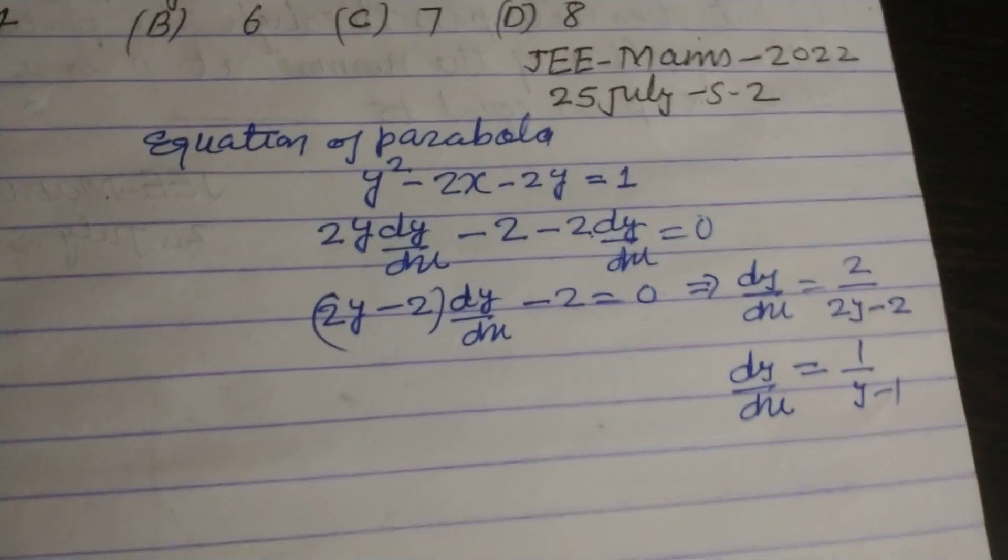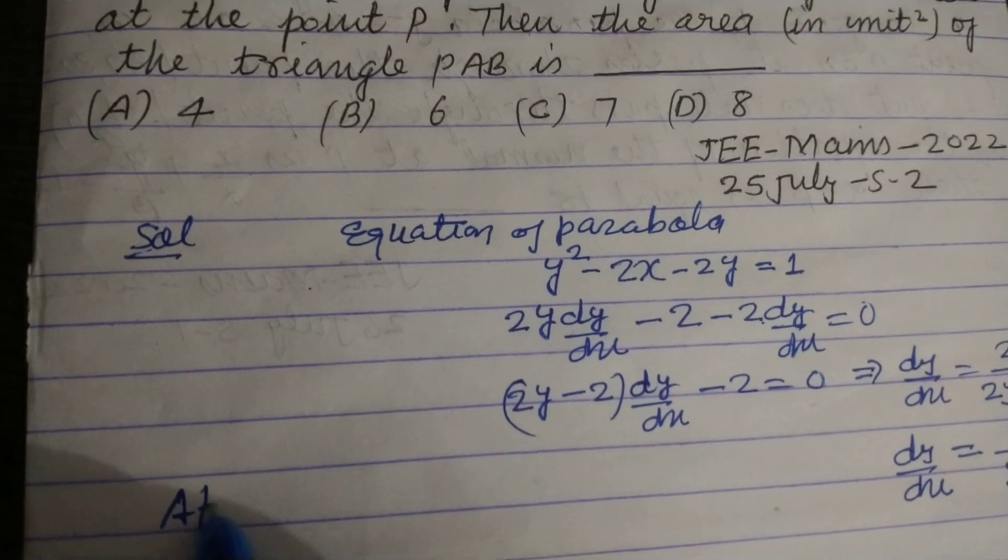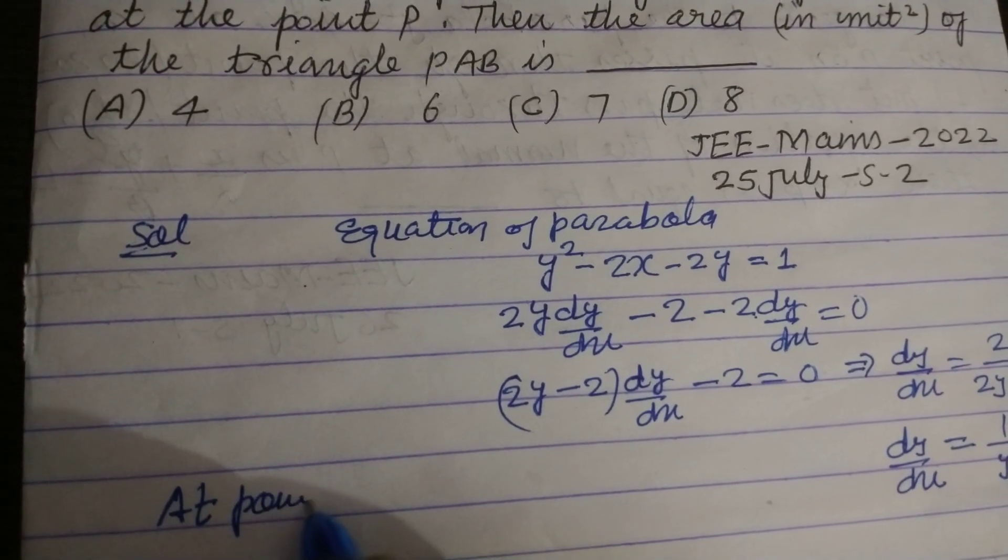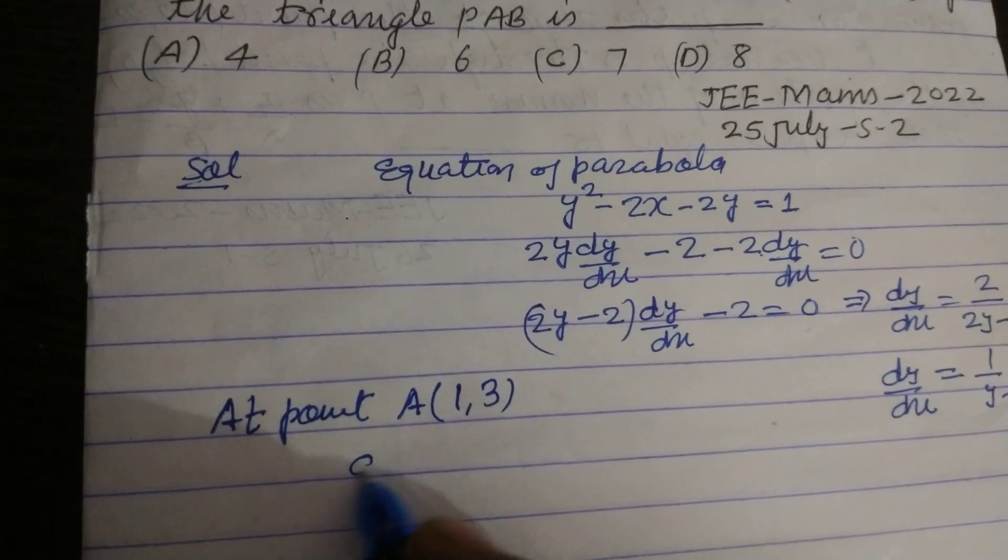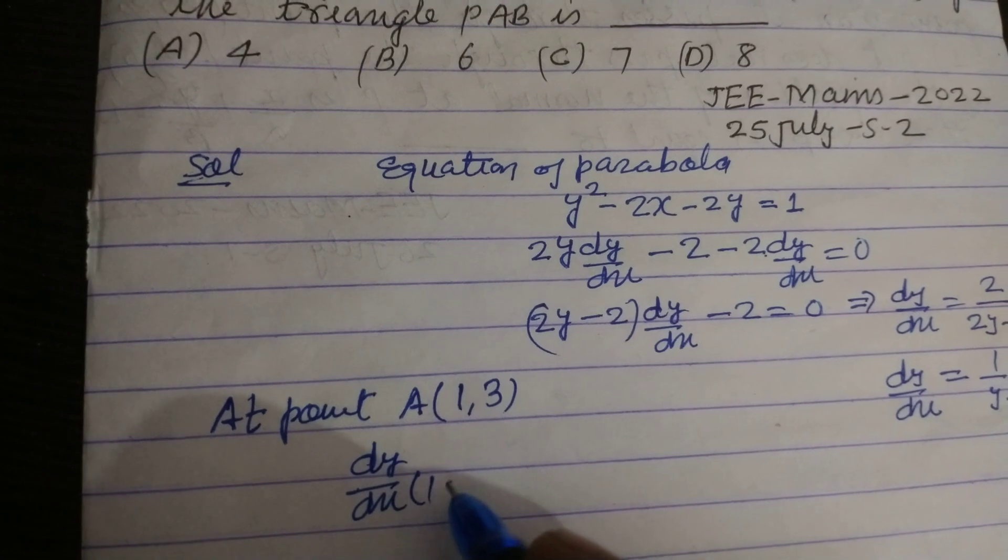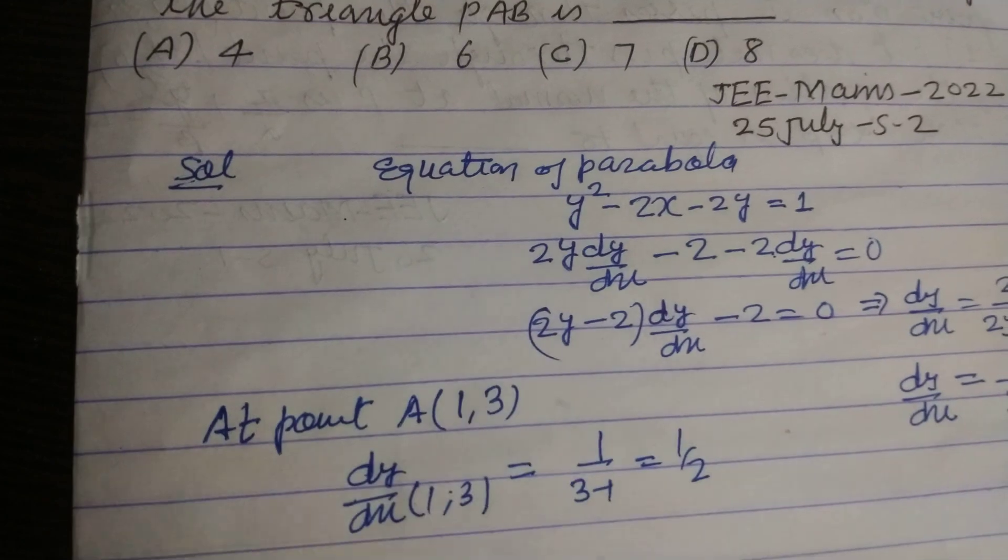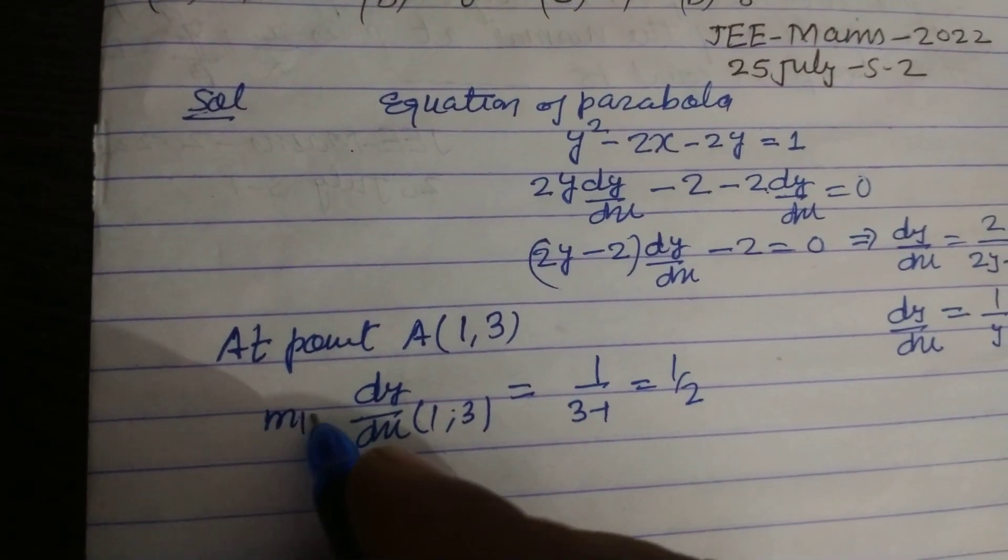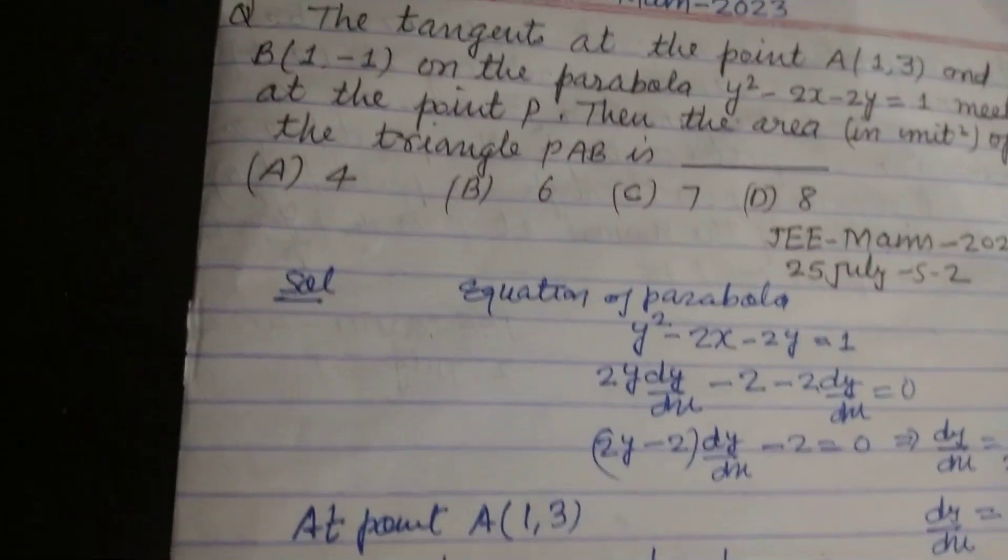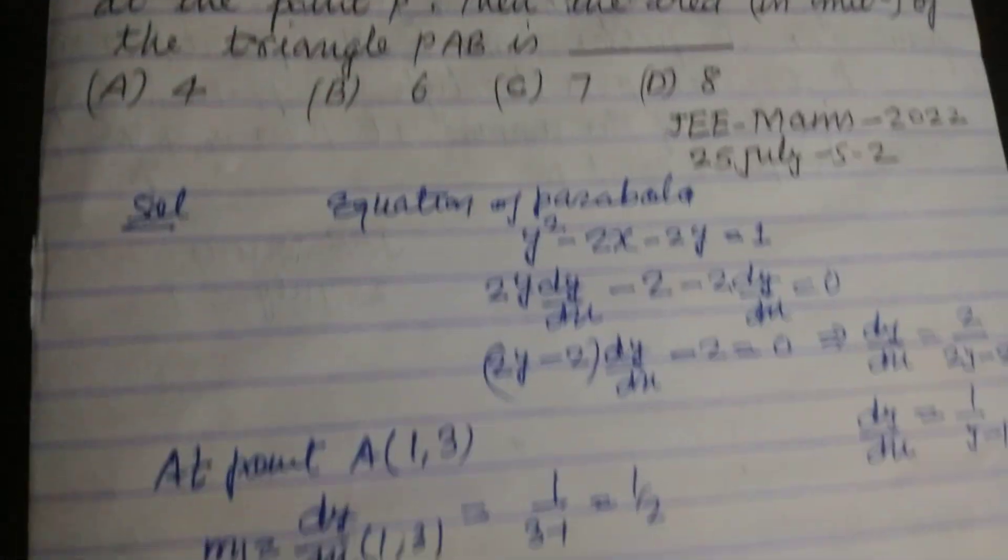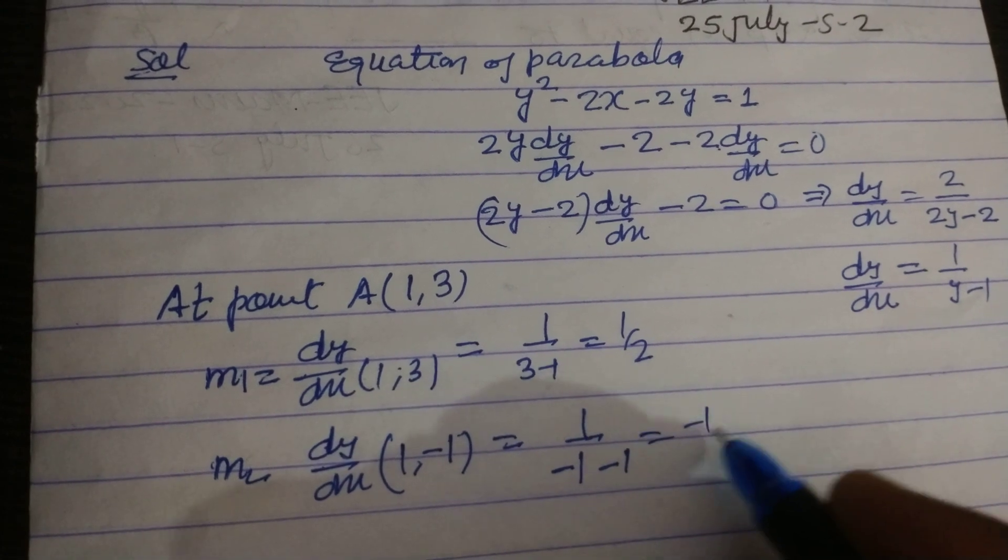So this is the gradient of the tangent, so at point A which is 1 comma 3, gradient is dy/dx at (1,3) = 1/(3 - 1) = 1/2. This is m₁ and m₂ at point dy/dx at point (1,-1), this is -1/2.